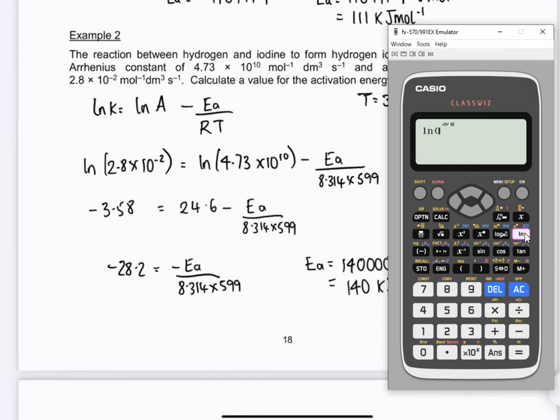So we can do the ln of the k value, 2.8 times 10 to the minus 2. And you can see there that's what I've got, minus 3.5755, minus 3.58. And if you do the ln of the A, 4.73 times 10 to the 10, you can see that number coming up too. There we go, 24.6.